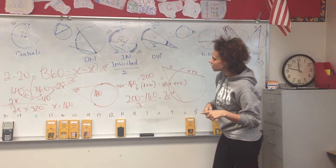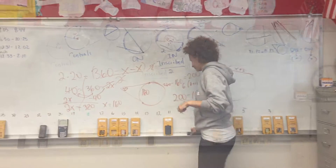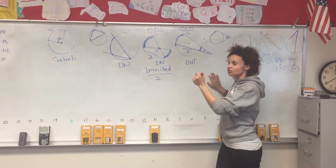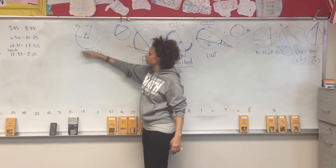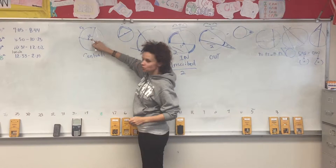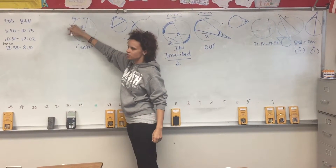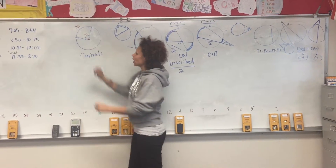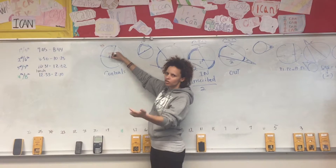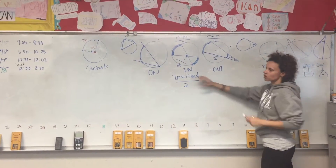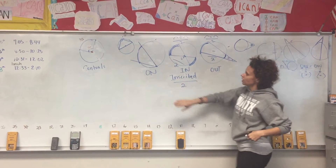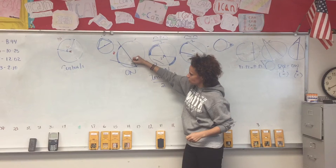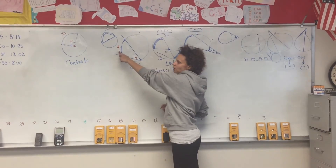That's everything you need — quiz on Monday. Quick review: for a central angle, it meets in the center of the circle and equals the arc measure directly. Then you have on, in, and out — all divided by two. If the angle is on the circle, divide the arc by two; if inside, add the arcs and divide by two; if outside, subtract and divide by two. If the arc is 100, the inscribed angle is 50; and to get back out, multiply by two.